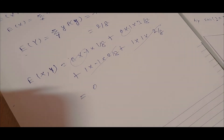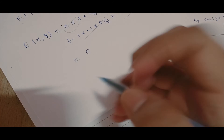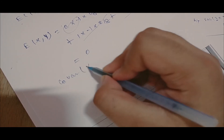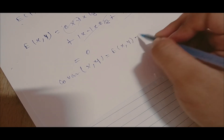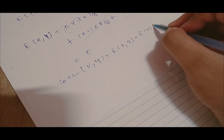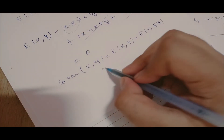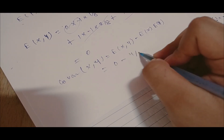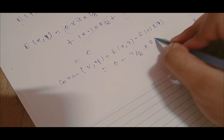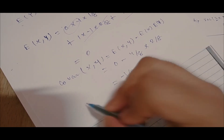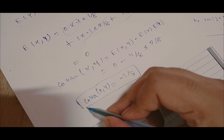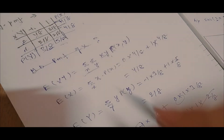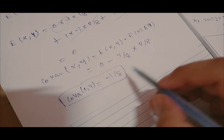Cov(X,Y) = E(XY) - E(X)·E(Y) = 0 - (4/8)·(2/8) = -8/64 = -1/8. So covariance of X and Y for this discrete data is -1/8.